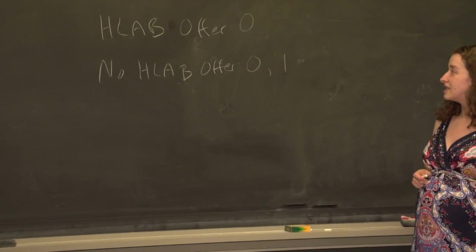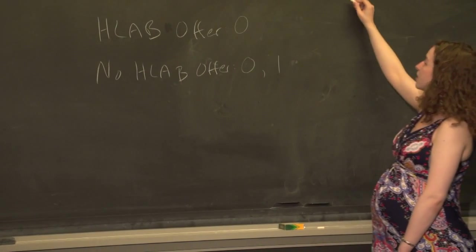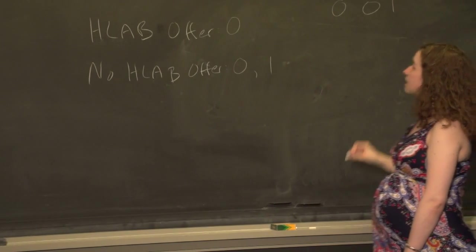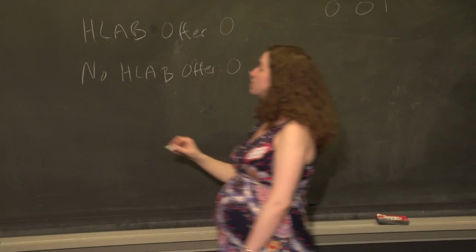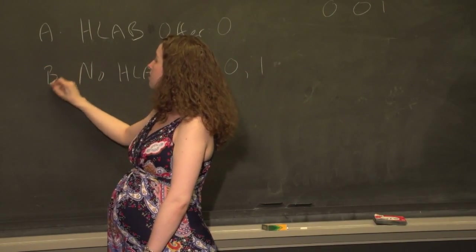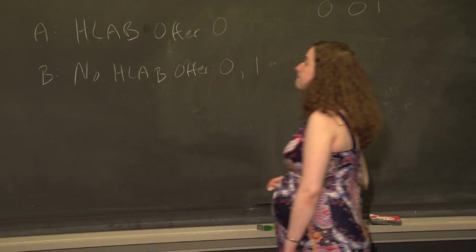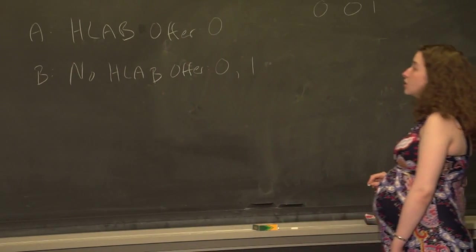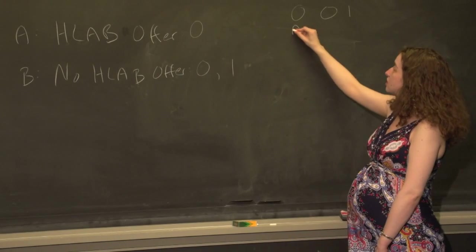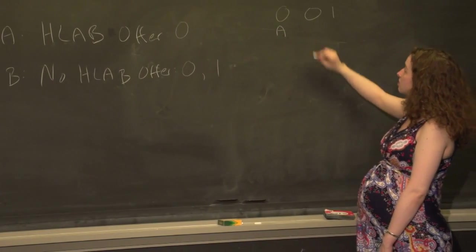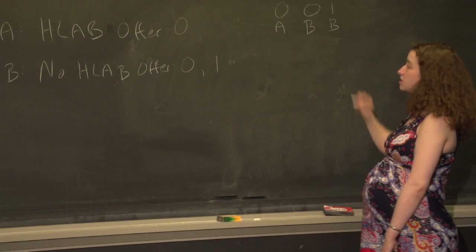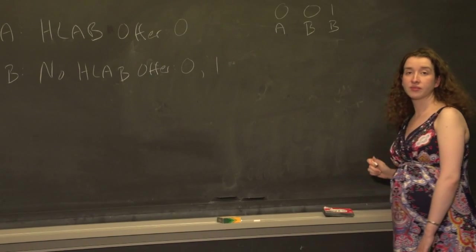Here's the idea. Let me write these three numbers this way, and let me label these two groups this way. Let's call this one A and this one B. What we actually observed is: for the one person in group A, a zero; and for the two people in group B, a zero and a one.